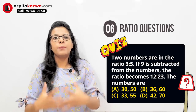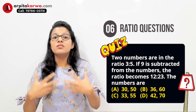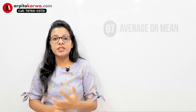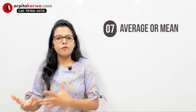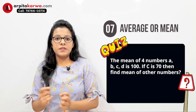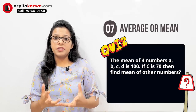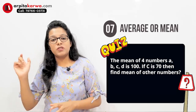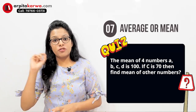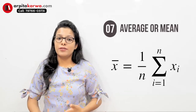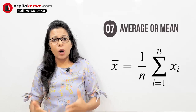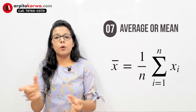Another question type I have seen many times in previous year papers is average or mean. For example: the average of four numbers a, b, c, d is 100; if c is 70, find the other numbers. What you need to do is use the formula: sum of all observations divided by number of observations. This is also very easy if you know the formula and how to apply it.